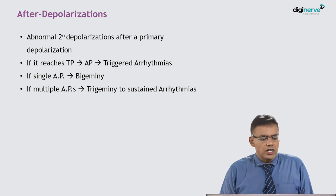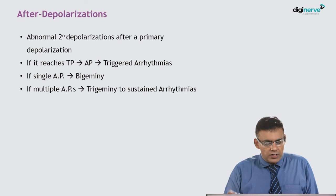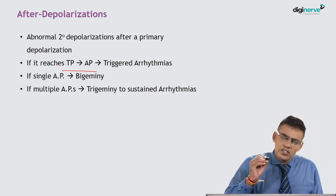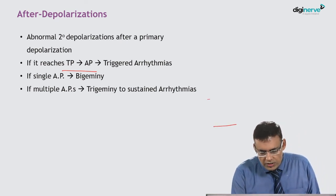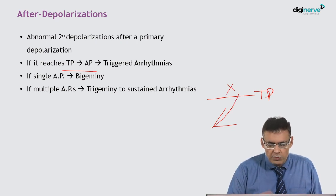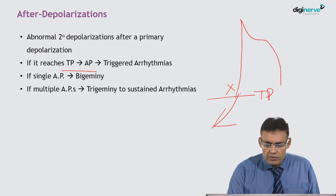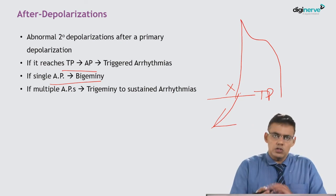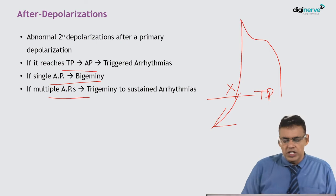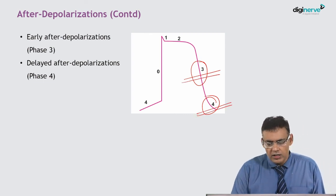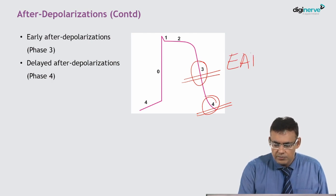After-depolarization is an abnormal depolarization occurring after the primary depolarization. It will only produce an action potential if it reaches the threshold potential. A single extra action potential results in bigeminy, while multiple action potentials can result in trigeminy or even sustained arrhythmias. After-depolarization is of two types: early after-depolarization (EAD), which occurs in phase 3, and delayed after-depolarization (DAD), which occurs in phase 4.